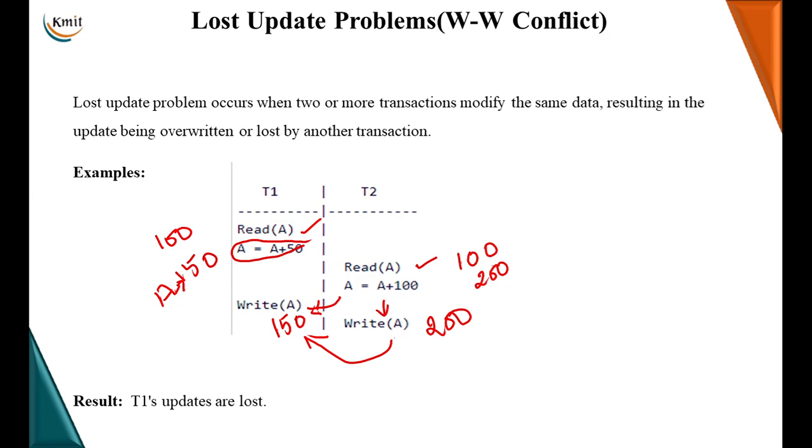So, it is called as lost update or otherwise write-write conflict. Both the transactions are writing the value A one after the other wherein the last transaction or last write only versus previous write will be lost or it will be overwritten. So, T1's updates are lost.